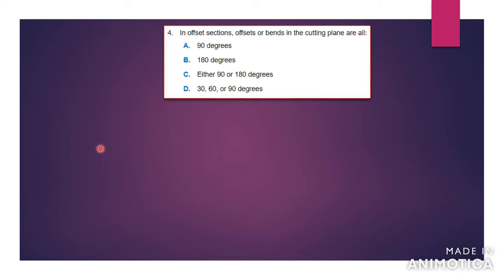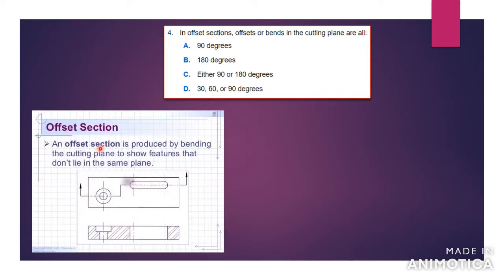Number four says: in offset sections — this is an example of an offset section where the plane doesn't run straight through. It starts here and then it is offset up a little bit and then it goes across again. The question asks: in offset sections, offsets or bends in the cutting plane are all how many degrees? So if you look between the two planes, the offsets or the bends would be at 90 degrees. You have 90 degrees here and 90 degrees here, and that would be the angle used for offset sections.